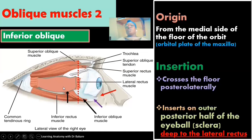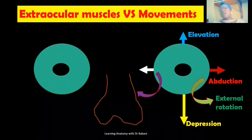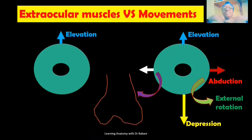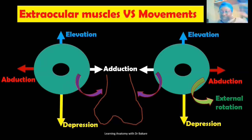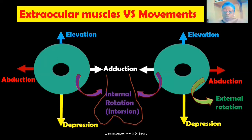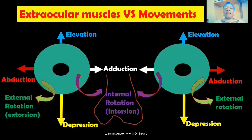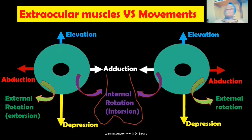The eyeball exhibits several movements. Elevation involves the upward movement of the eyeball; depression involves the downward movement. Adduction is drawing the eyeball towards the median plane, while abduction is taking the eyeball away from the median plane. Internal rotation, also referred to as intorsion, rotates the eyeball towards the nose. External rotation, also referred to as extorsion, is an outward rotation of the eyeball.